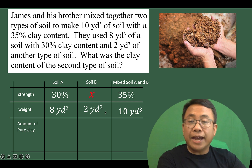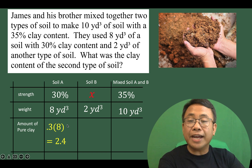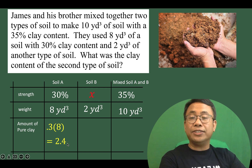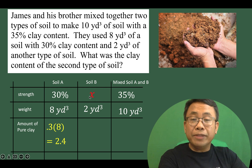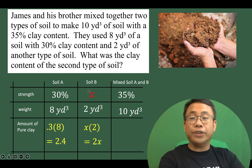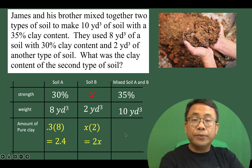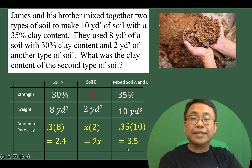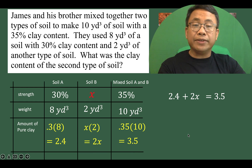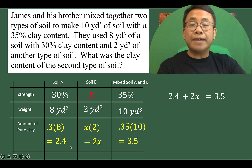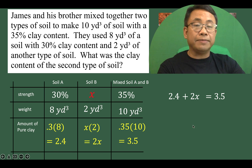If 30% of 8 cubic yards is clay, then 0.3 times 8 gives the amount of pure clay for soil A, which is 2.4 cubic yards. For soil B, multiply x times 2 to arrive at 2x, representing the amount of pure clay for soil B. For the mixture, 0.35 times 10 gives 3.5 cubic yards for the clay content. From here we form the equation: 2.4 plus 2x equals 3.5, meaning the clay content of soil A plus the clay content of soil B equals the clay content of the mixture.